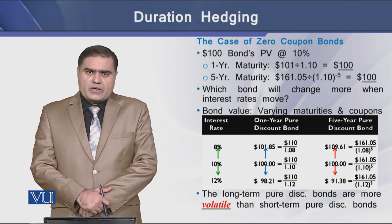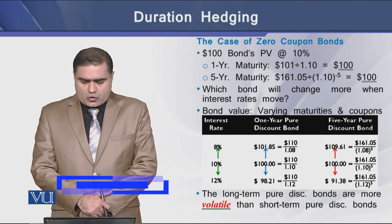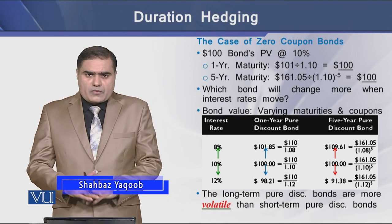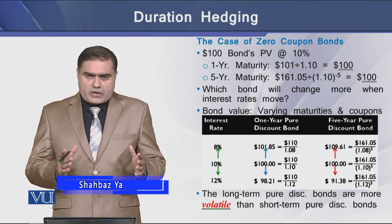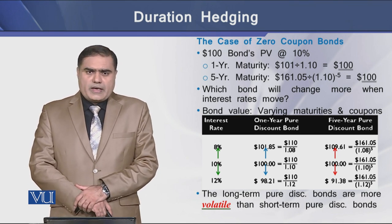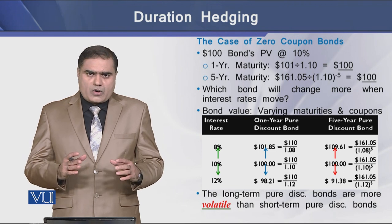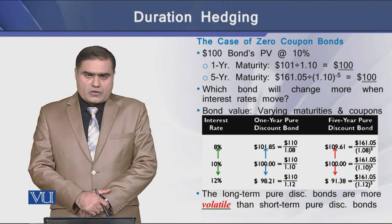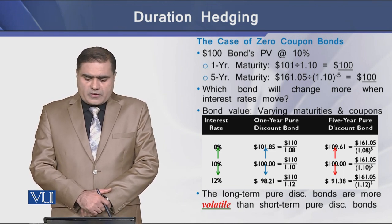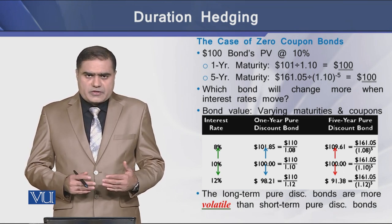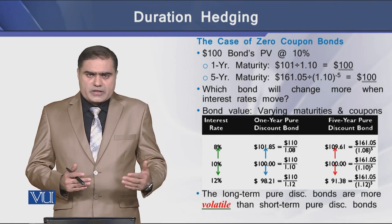We have a world where the market interest rate is 10% and there we have a zero coupon bond with the face value of $100. For this type of bond, the present value of a bond having 1-year maturity is equal to $100, and the present value of such a bond with 5-year maturity is also equal to $100. Now let's see what changes occur in bond prices if there is any change in the interest rate.